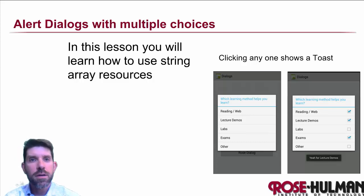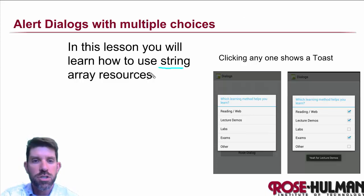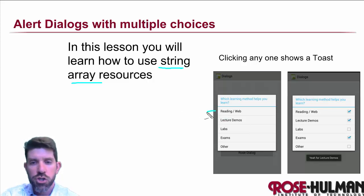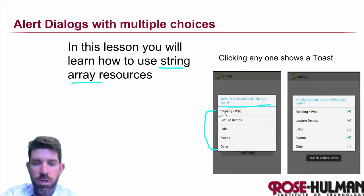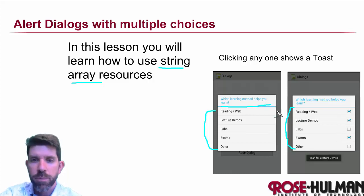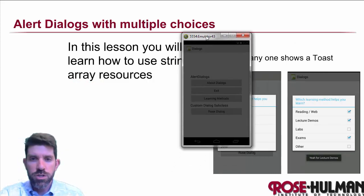Welcome back. Next up is alert dialogues with multiple choices. The new thing this time is how to use string array resources. We're going to show a whole list of items, and our target app will ask which learning method helps you learn best. You can have a checklist, radio buttons, or a multiple-item checklist where you can choose multiple things.